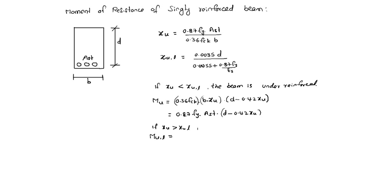The beam is over reinforced. Here we can use concrete based formula only. MU limiting equals 0.36 fck, compressive stress in concrete average stress, into B into XU limiting. Limiting value we should use here, also D minus 0.42 XU limiting. So only this formula can be used to find MU limiting.